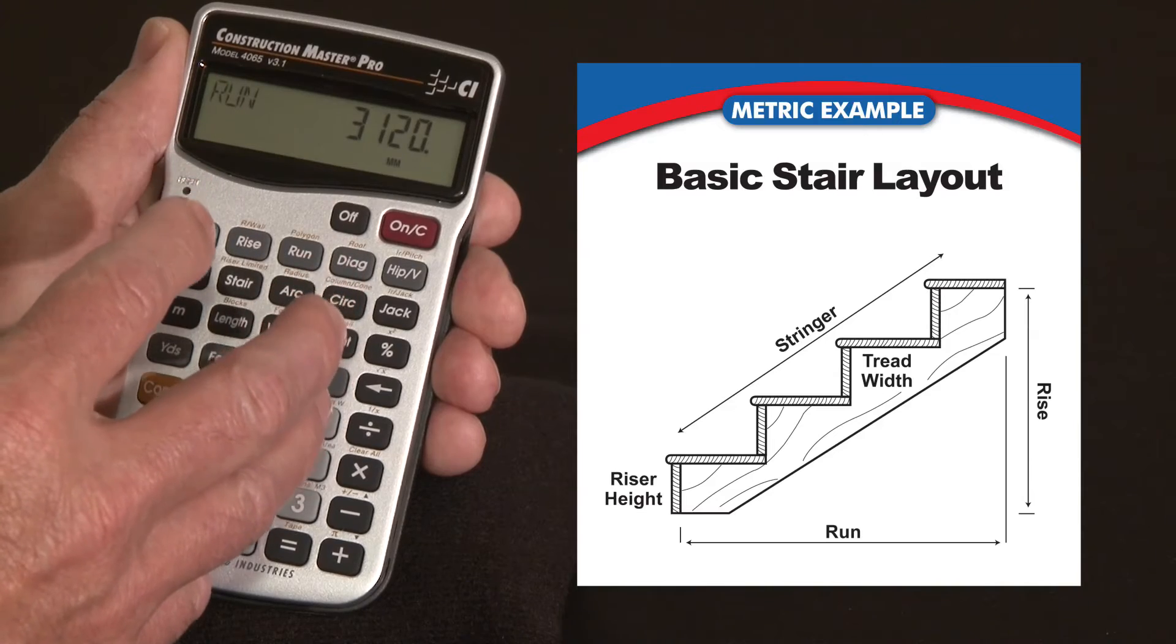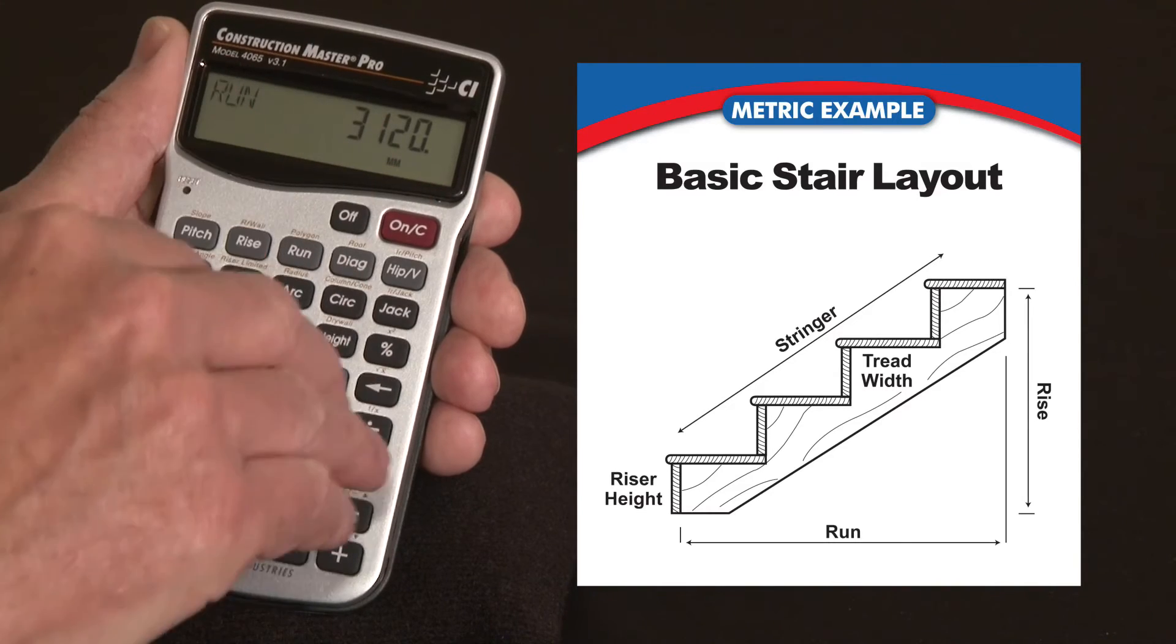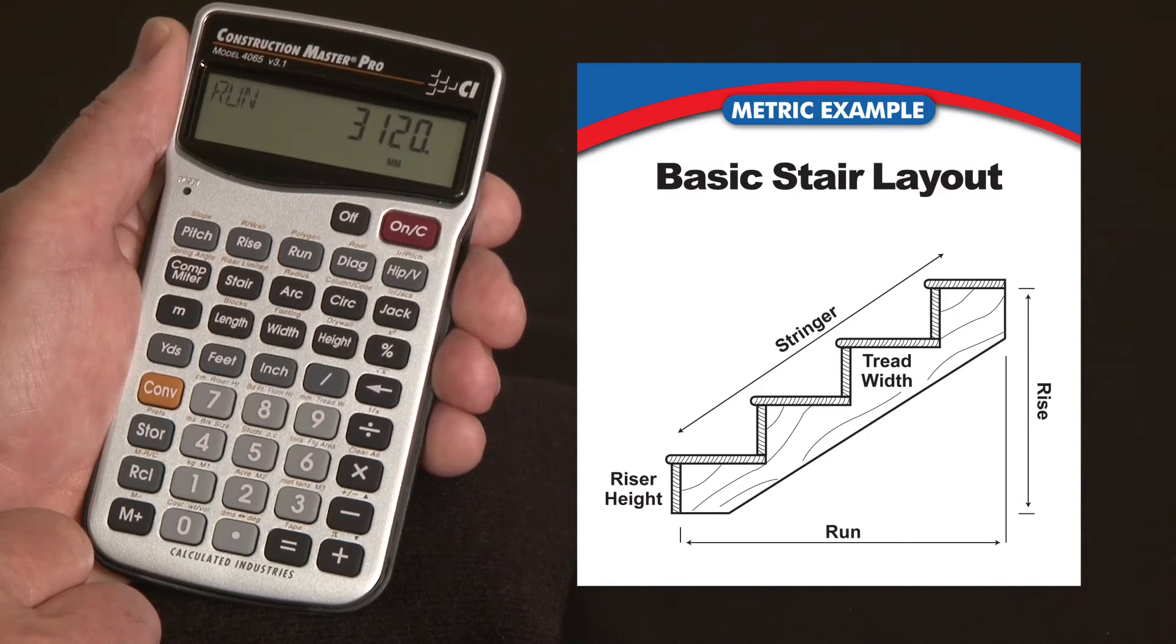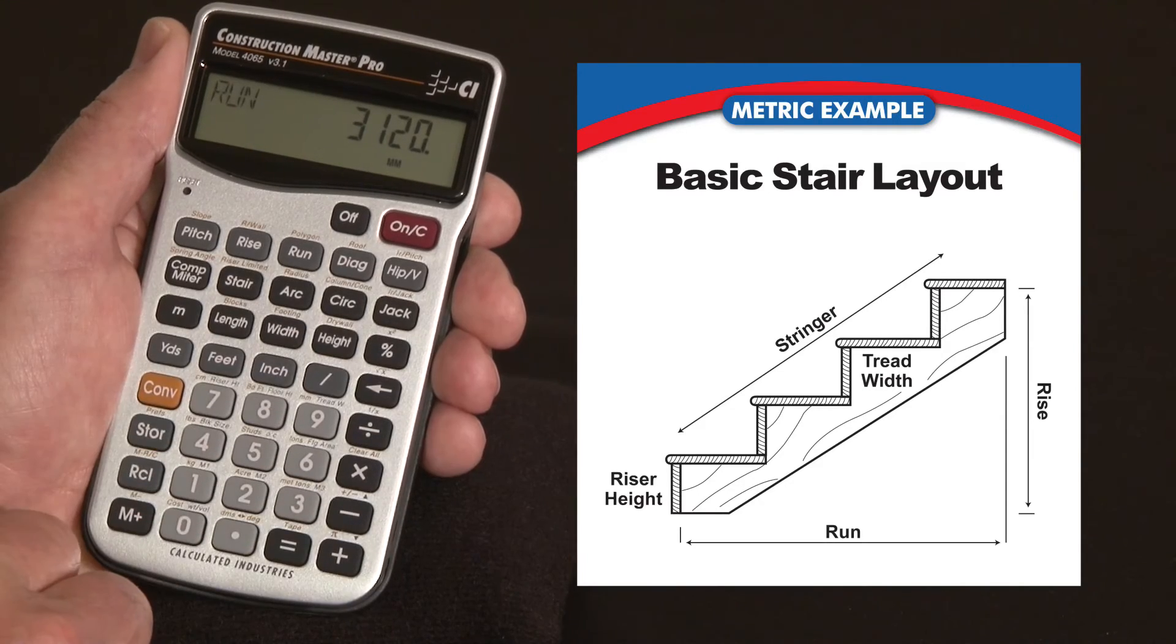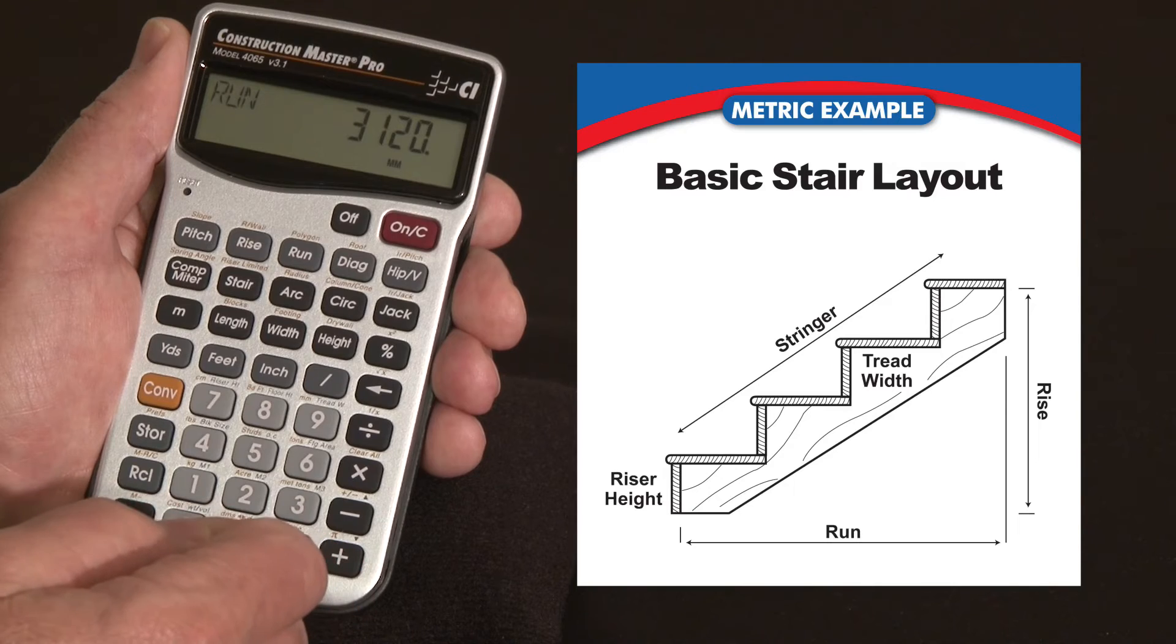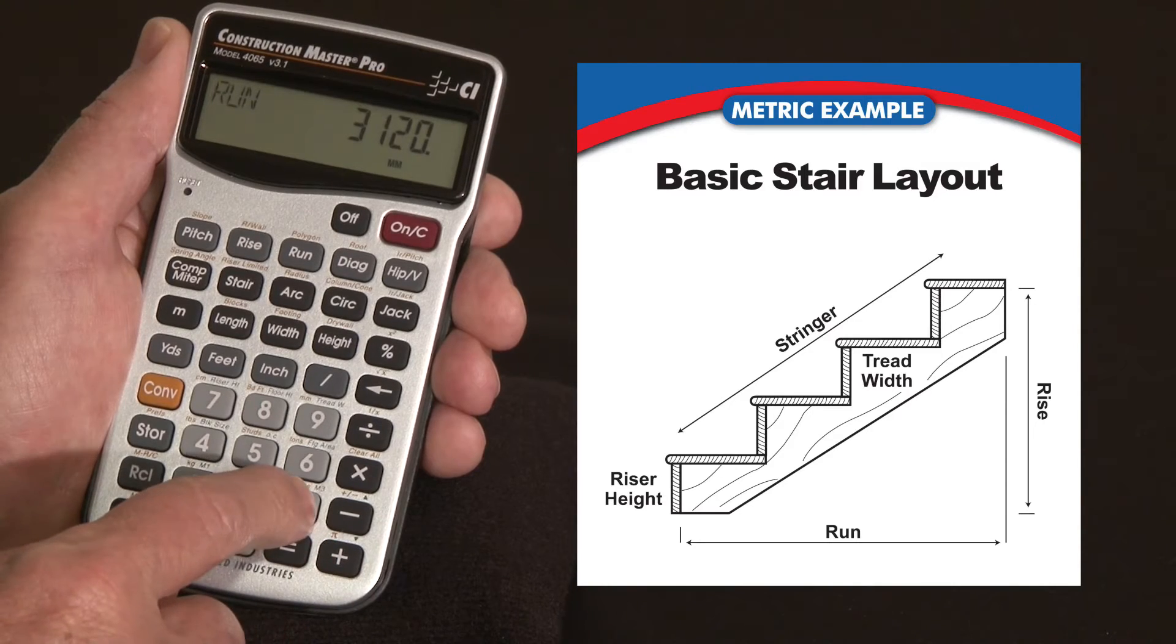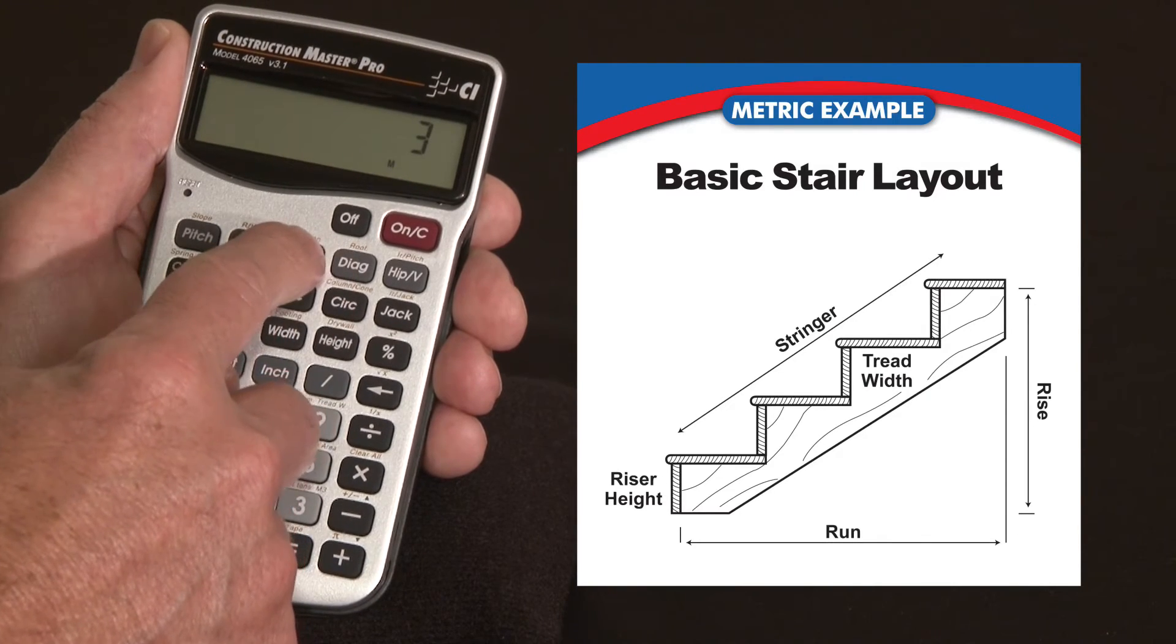Now let's say we change this situation and play a little what if. Say these stairs are going down into a basement or some situation where you've got a limited horizontal run space available. So let's say we've only got 3 meters to work with. So I'm going to enter 3 meters, and I'm going to enter that as my run.